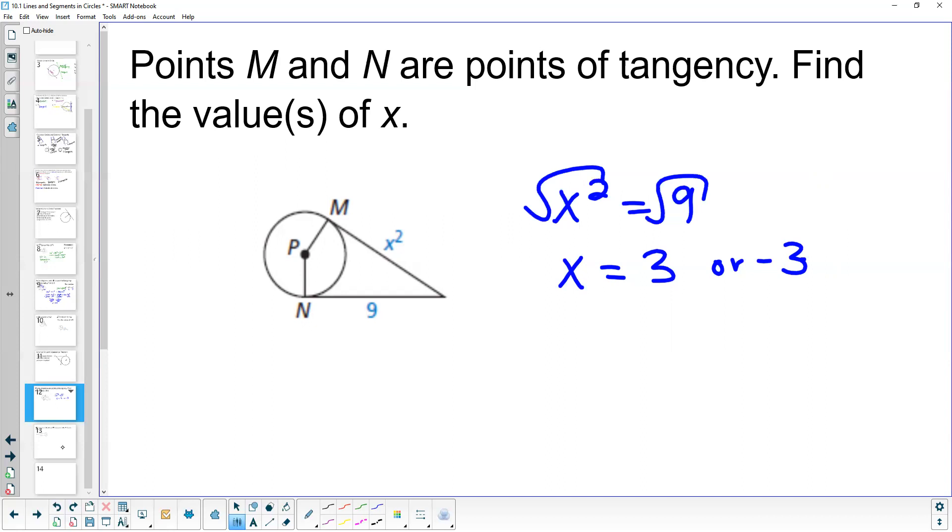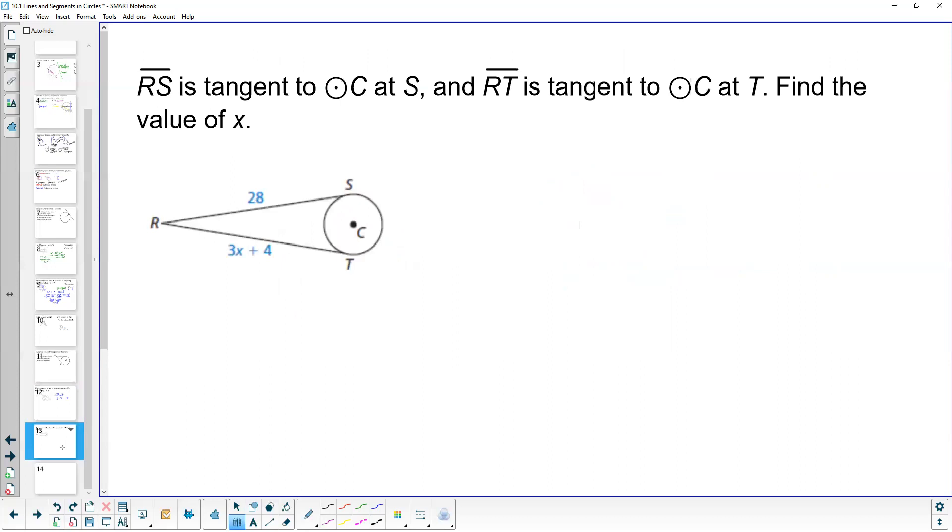Let's take a look at one last example here where we apply this theorem. So segment RS is tangent to circle C at point S, making point S our point of tangency, and segment RT is tangent to circle C at point T, making point T our point of tangency. We want to figure out what the value of x is.